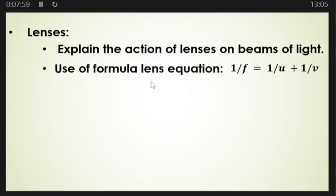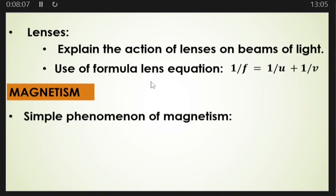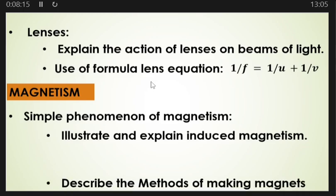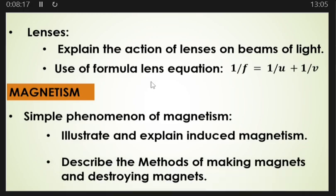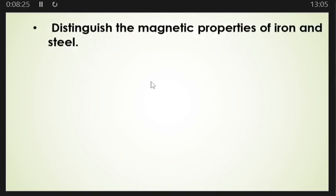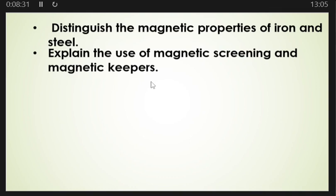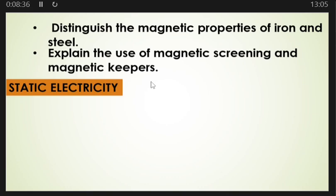From here you need to look at magnetism. Under magnetism, look at the simple phenomena of magnetism — illustrate and explain induced magnetism, describe the methods of making magnets and destroying magnets, distinguish the magnetic properties of iron and steel, and explain the use of magnetic shielding and magnetic keepers.